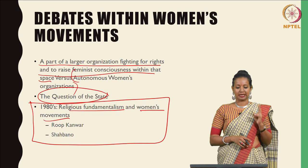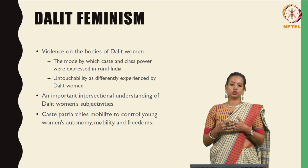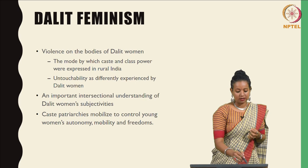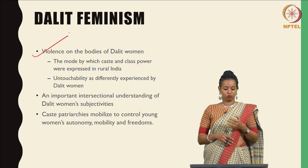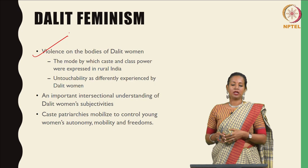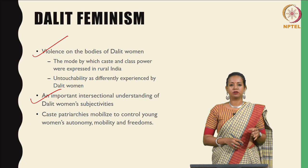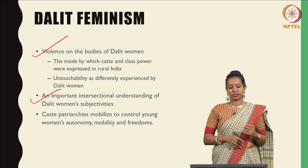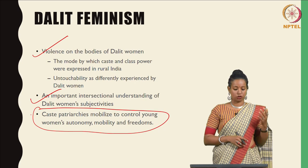Kalpana spoke about two important landmark cases: Roopkavar and Shabano. She also spoke about Dalit feminism as addressing a completely different set of issues in relation to women's rights than mainstream feminist movements in India. Dalit feminists argued that violence on the bodies of women was of a different character — it was the mode by which caste and class power were expressed in rural India. Untouchability was always experienced differently by Dalit women than Dalit men, because it was assumed that Dalit women's sexuality was always freely available to upper-caste men. Dalit feminism therefore argued for an important, specifically located intersectional understanding of Dalit women's subjectivities, and Kalpana argued that even today caste patriarchies are mobilizing to control young women's autonomy, mobility, and freedoms.